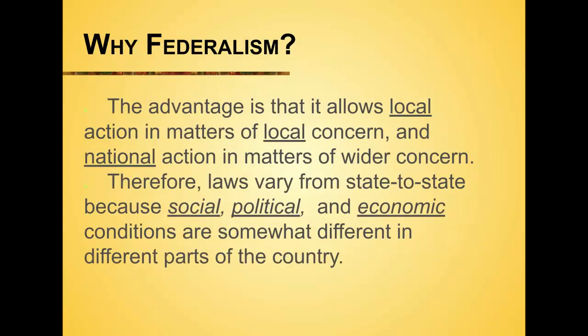Why does federalism allow state differences? To leave local actions and matters of local concern to local people. What matters in Wisconsin might not matter in Montana or New York. National actions are of a wider concern, so the federal government handles things that impact the whole country. States decide things for themselves because they are different socially, politically, and economically — for example, Wisconsin has laws protecting agriculture because farming is a big part of that state.